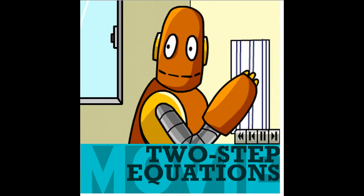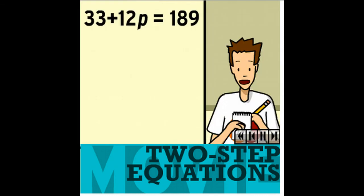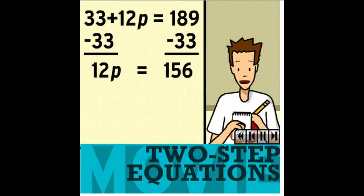Yeah, this equation involves addition and multiplication, so it has two steps. That 33 is just hanging out there on the left, so we can start by subtracting that from both sides. This gets us closer to isolating that variable P. Now, 12P equals 156. Now we can divide each side by 12, which means P equals 13.